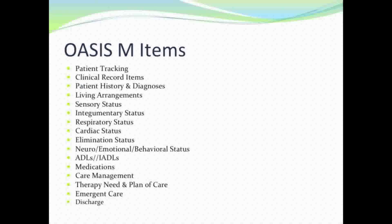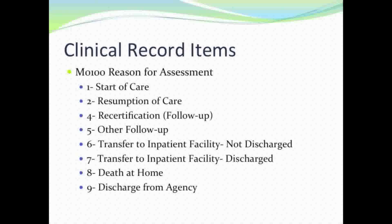The OASIS M items are separated into categories: patient tracking, clinical record items, patient history and diagnosis, living arrangements, sensory status, integumentary status, respiratory status, cardiac status, elimination status, neuro/emotional/behavioral status, ADLs and IADLs, medications, care management, therapy need and plan of care, emergent care, and discharge.